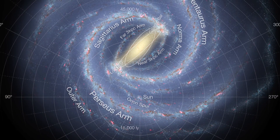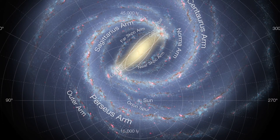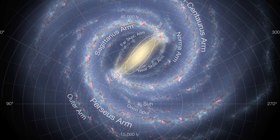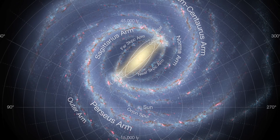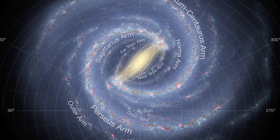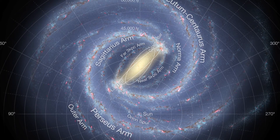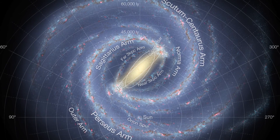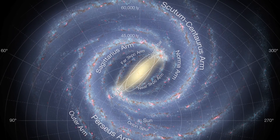Our solar system is located within the Milky Way disk, around 27,000 light years from the galactic centre of the galaxy.